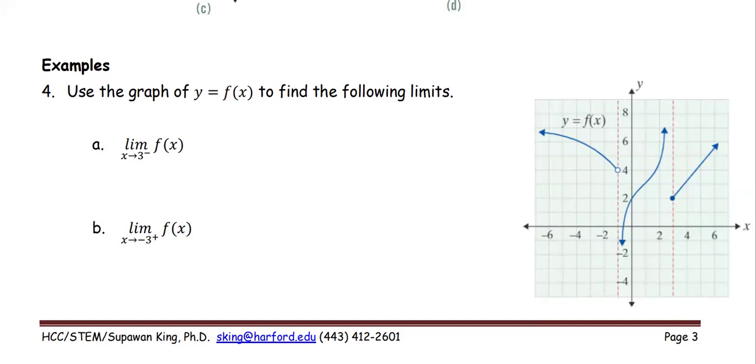In part A, limit as x approaches 3 from the left. We target the value 3, but from the left side of the function. Where is the value 3 of the x? 3 is right there. From the left side, the graph on the left side of the 3, along with the middle piece of the graph here, approaching positive infinity. So the answer for this part is positive infinity.